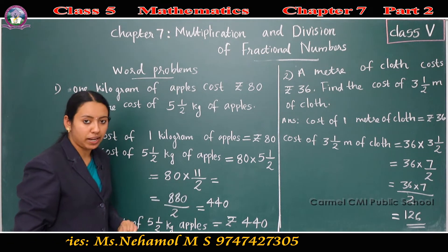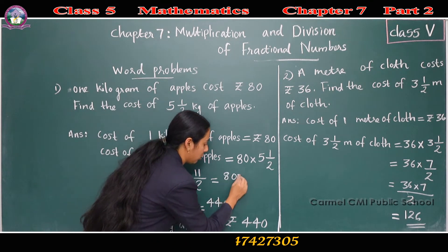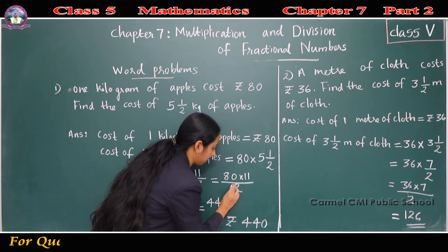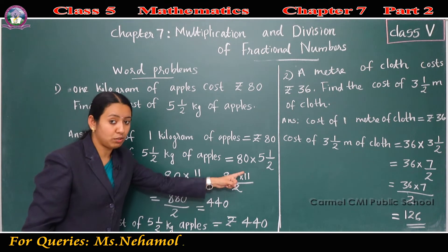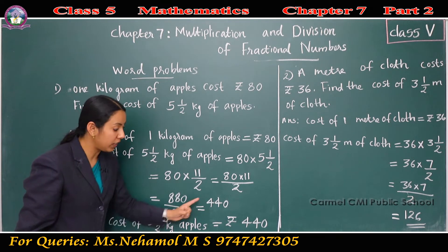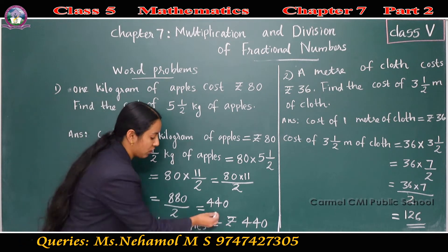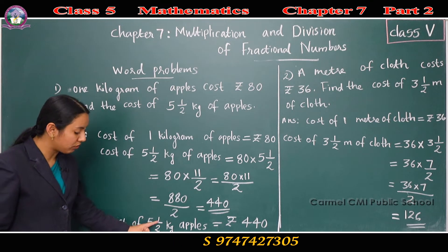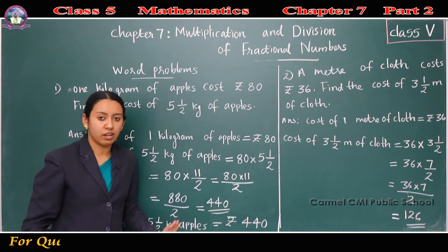So 80 into 11/2. That is 80 into 11, all divided by 2. 80 into 11 is 880. 880 by 2 is 440. So the answer is 440. The cost of 5½ kilograms of apples is rupees 440.